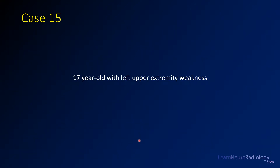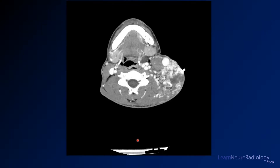Case 15 is a 17-year-old with left upper extremity weakness. Here we have some images from a CT angiogram. You see this arterial phase here. This bright thing right here is just a palpable abnormality marker, so the patient has an abnormality that they can feel there.